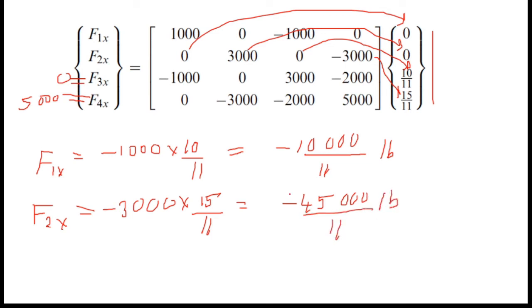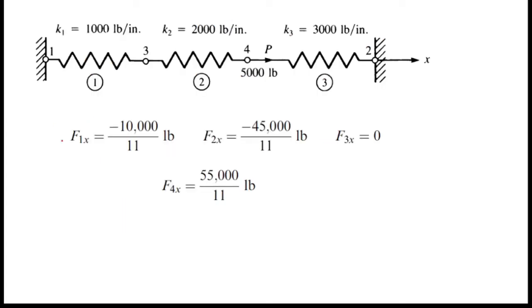So I know all four forces: F1x, F2x, F3x, and F4x. I will write them here. This is the F1x force, and this is F2x, and F3x is equal to 0, and F4x is equal to 5000.